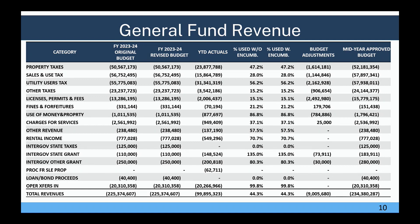Measure H was approved by voters in 2018 and changed the rate structure for the documentary transfer tax on sales of properties in Richmond. Before Measure H, that revenue stream was usually $5 million to $6 million. Although it's a very volatile stream, we have seen some years be as high as $20 million. For the next few slides, I'll focus on these top three revenue streams — where this revenue comes from, who pays it, and how we get it.